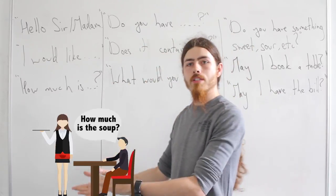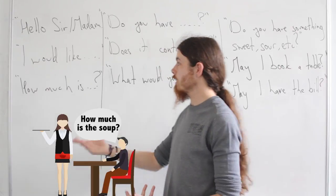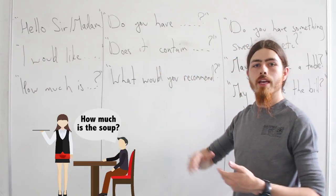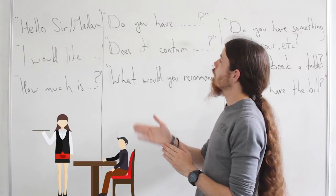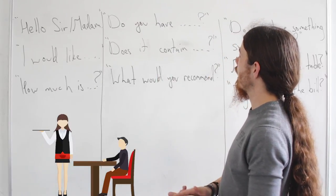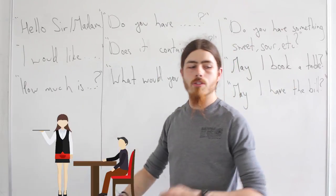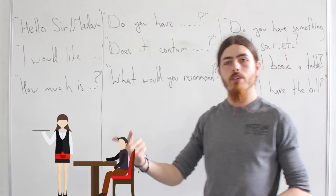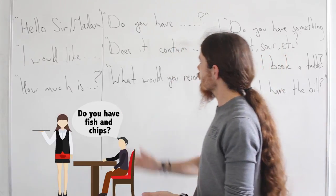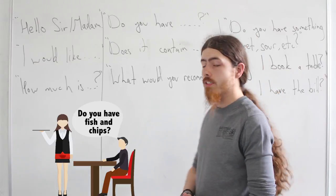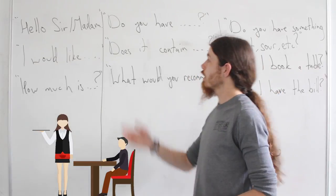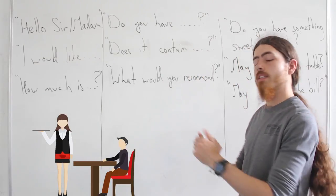Now if you want to get a bit more specific, we can ask do you have something like this? Do you have chicken, fish, meat? And if it contains meat—if you're a vegetarian for instance—does it contain meat? Does it contain pork, chicken, fish?